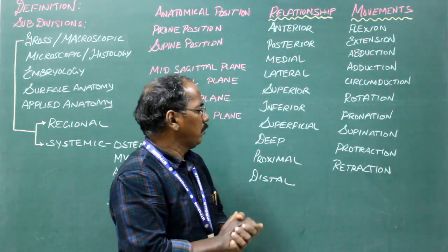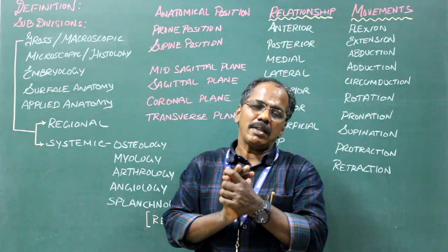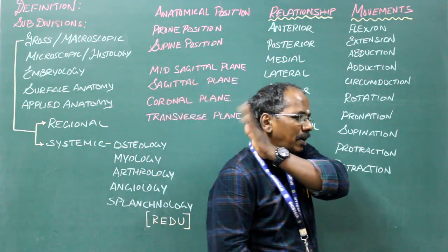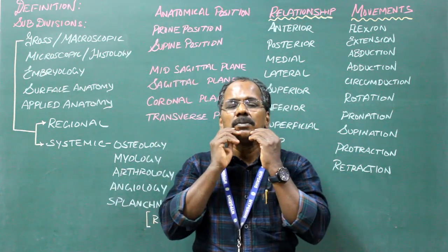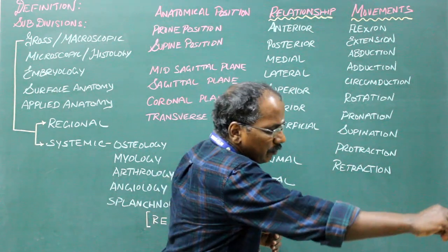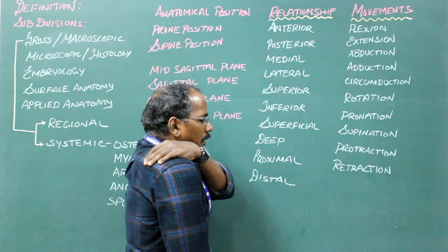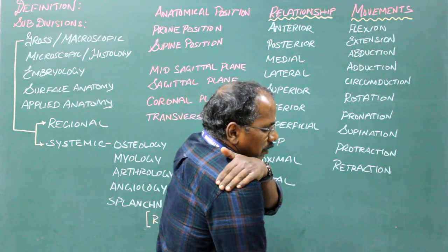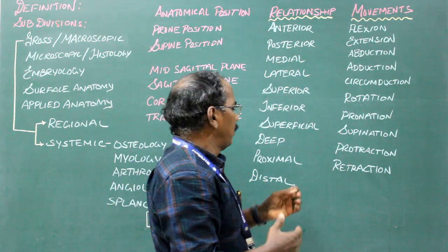Protraction means moving or gliding forwards; retraction means moving or gliding backwards. It is possible in only two places: in the scapula (the shoulder blade) and in the mandible (the lower jaw). For example, when you reach forward to take something from a table, the scapula glides forwards on the posterior surface of the thorax — that is protraction. When you come back to normal, the scapula glides backwards — that is retraction.